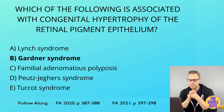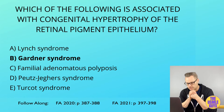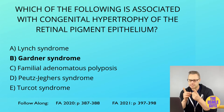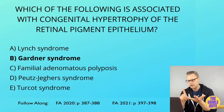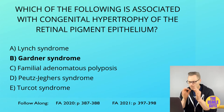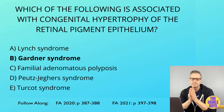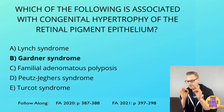The last of the polyposis syndromes is juvenile polyposis syndrome, which is autosomal dominant and is associated with high numbers of hamartomatous polyps in the stomach, small bowel, and colon. The key to remembering this one is that it happens in younger people, typically under five years of age.